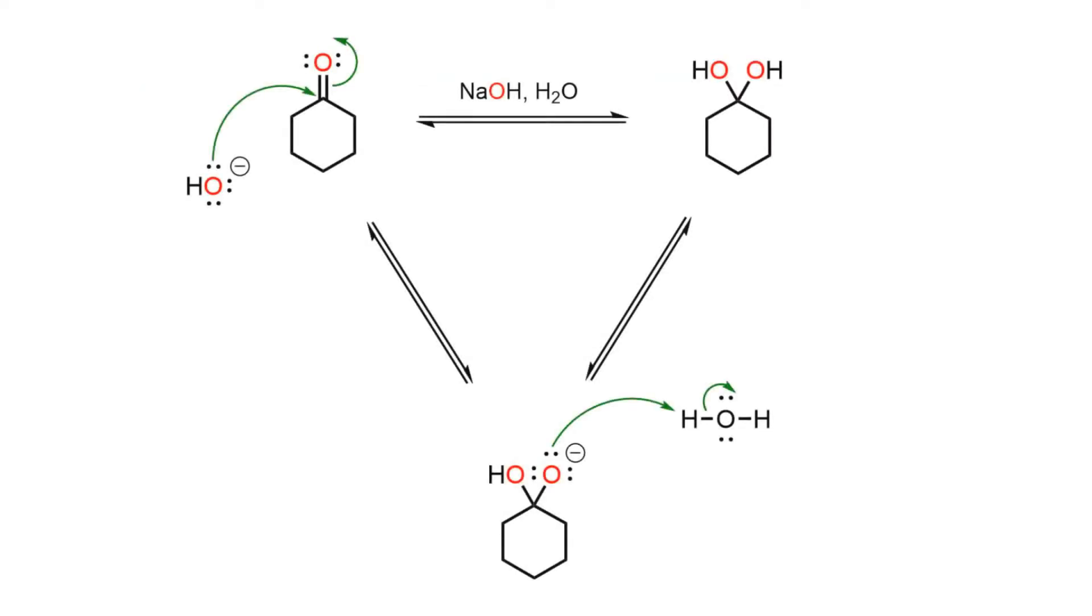The process involves the hydroxide behaving as a nucleophile and attacking the electrophilic carbonyl group to push electron density onto the oxygen to produce an alkoxide. This species then deprotonates the water solvent and the hydrate is complete. This step also regenerates hydroxide so the process is catalytic in base.